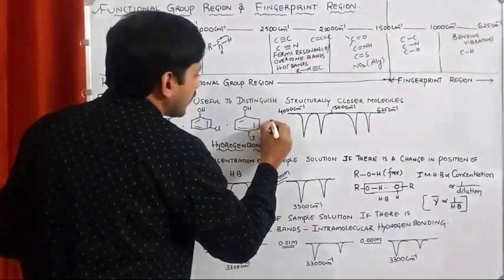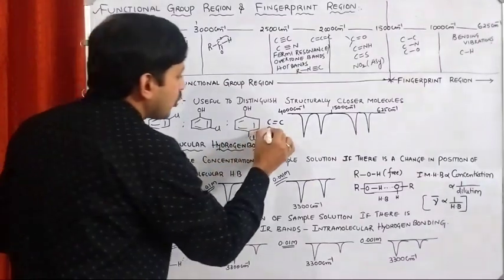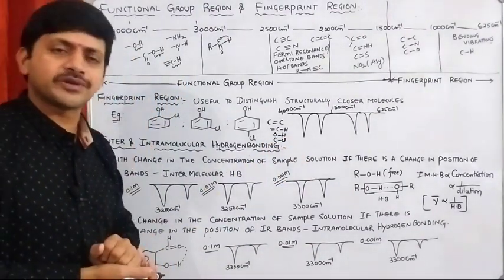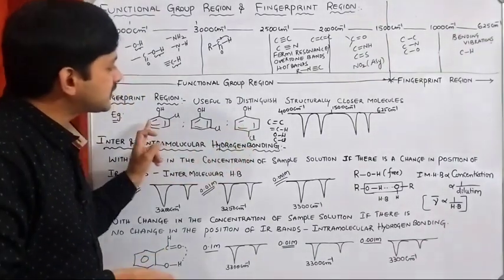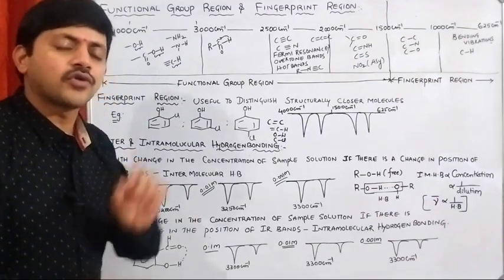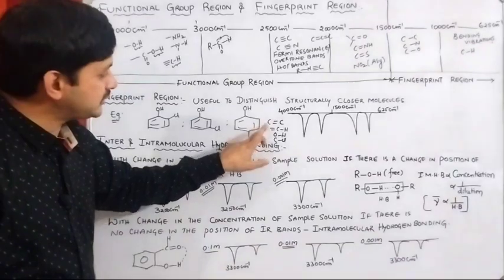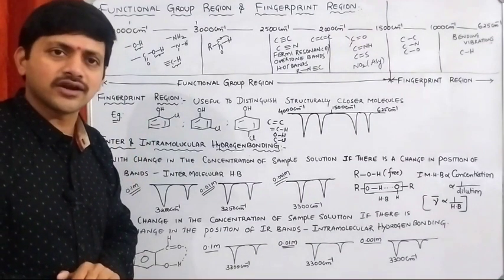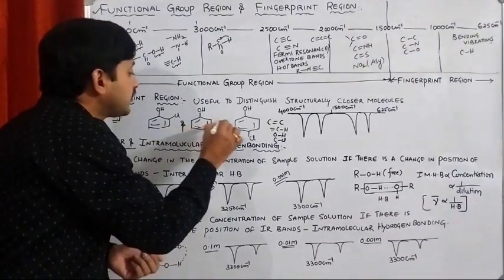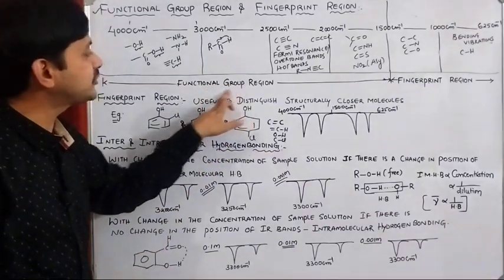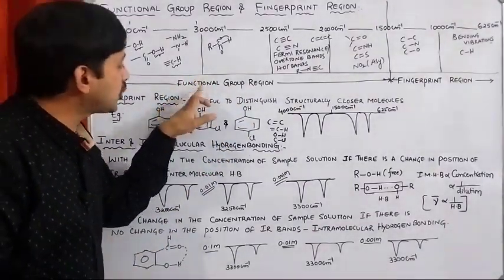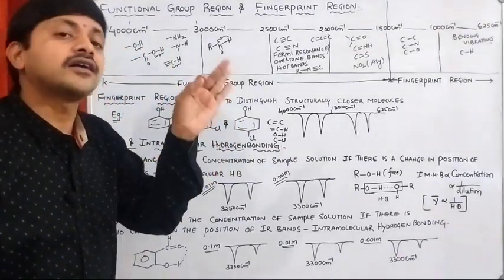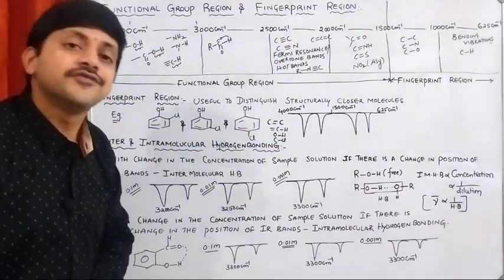If you look at all three molecules, the kinds of bonds present are: aromatic C-C bond, aromatic CH bond, OH bond, and C-Cl bond. Whenever these three molecules are subjected to IR spectra interpretation, the IR spectra will give C=C stretching frequency, CH stretching frequency, OH stretching frequency, and C-Cl stretching frequency — only these. Because of this reason, we cannot distinguish these three molecules using the functional group region, since the functional group region cannot distinguish structurally closely related molecules. In order to distinguish these kinds of molecules, we use the concept of fingerprint region.